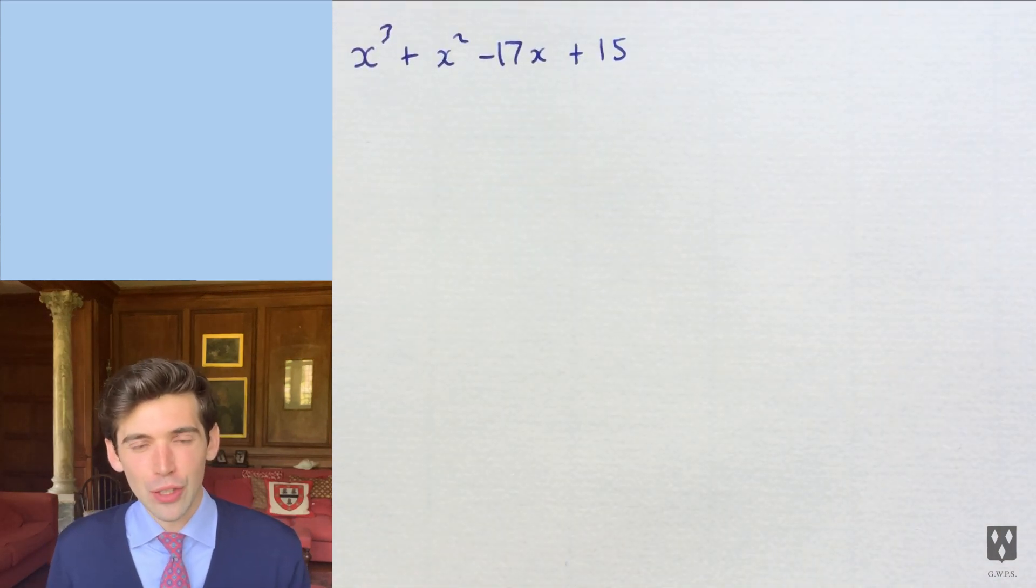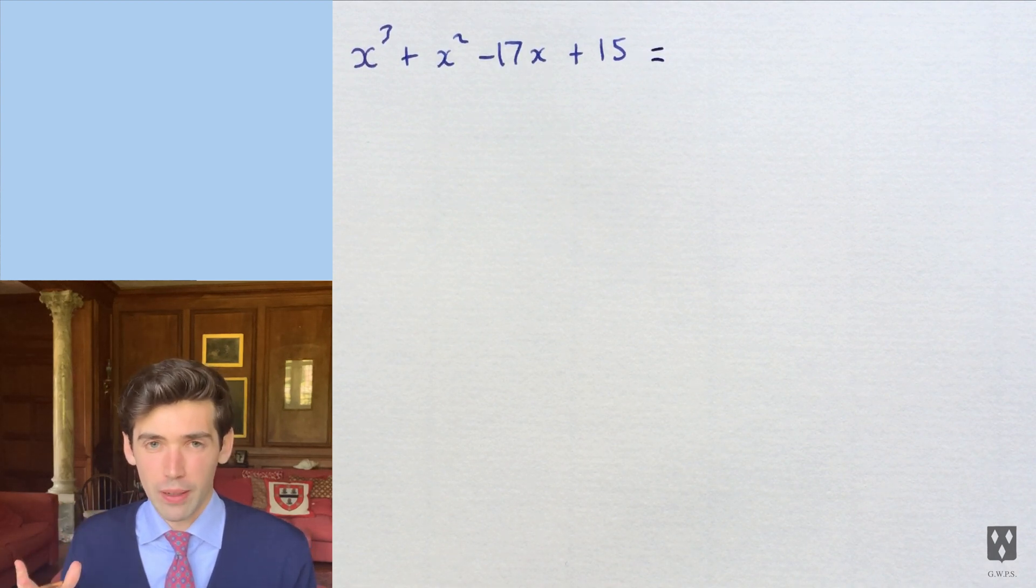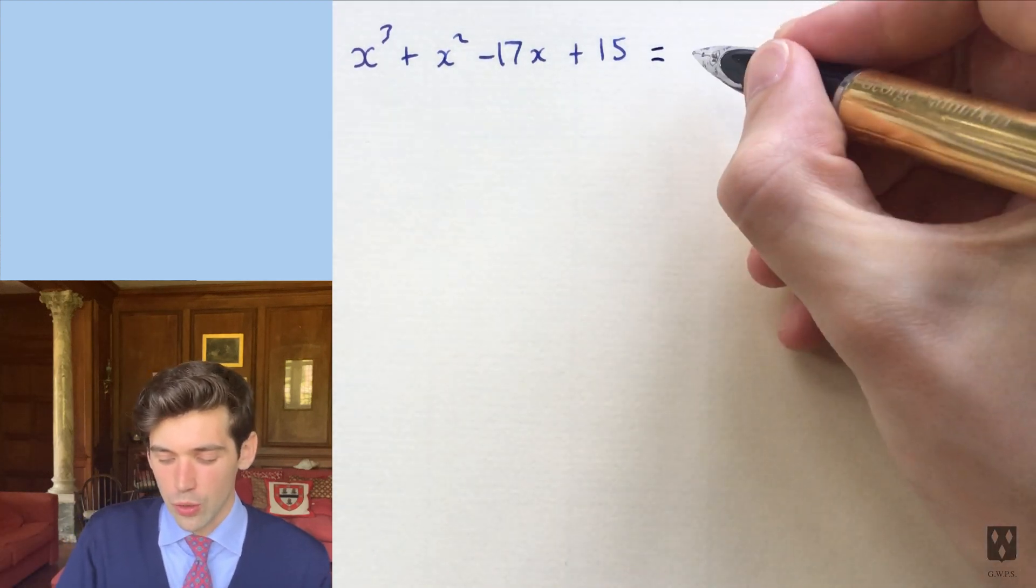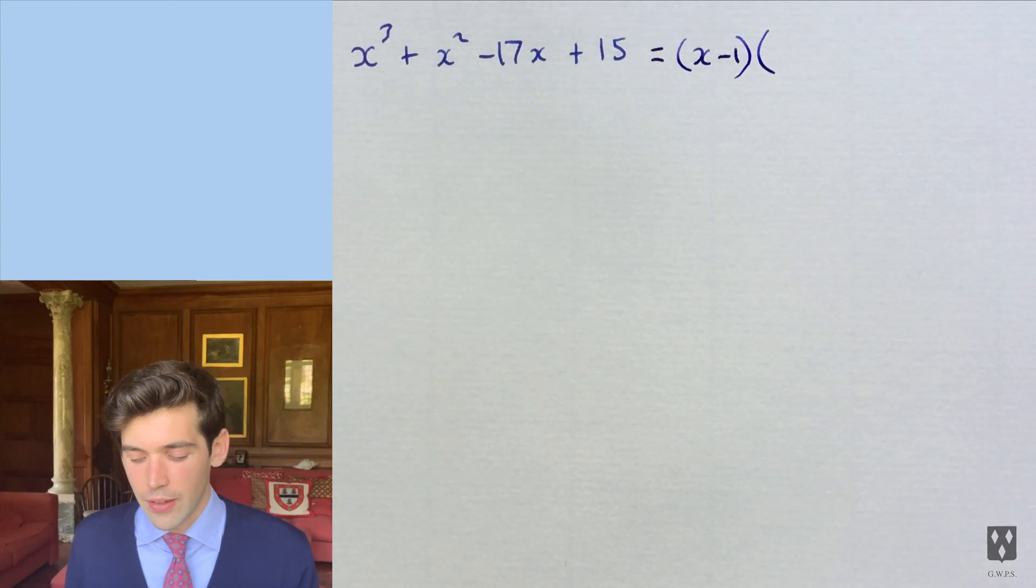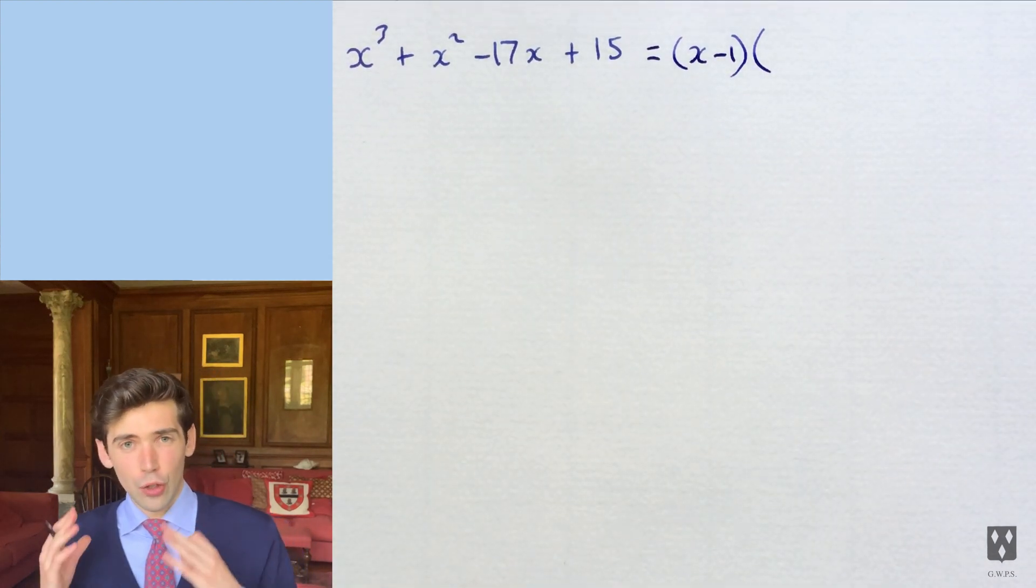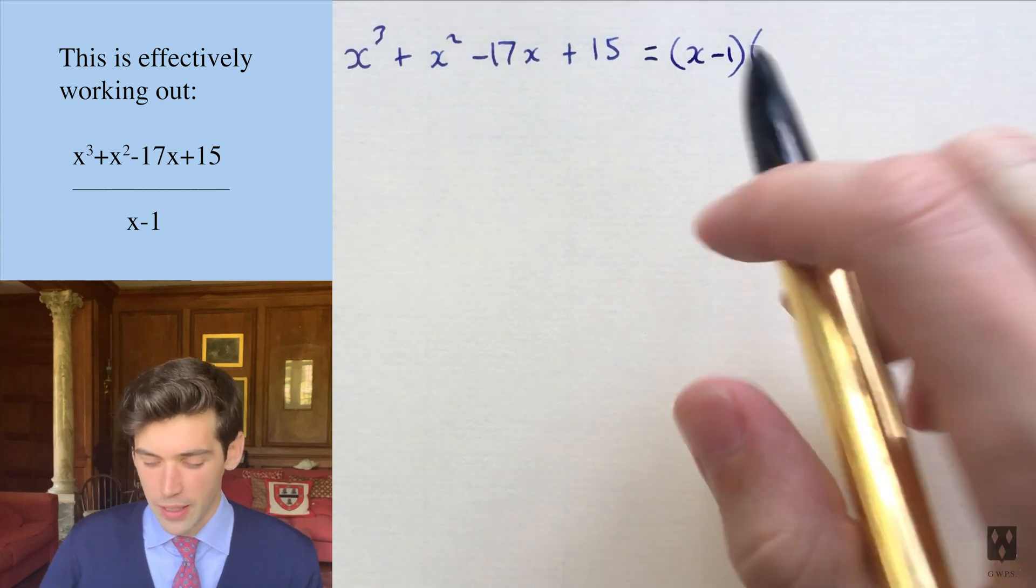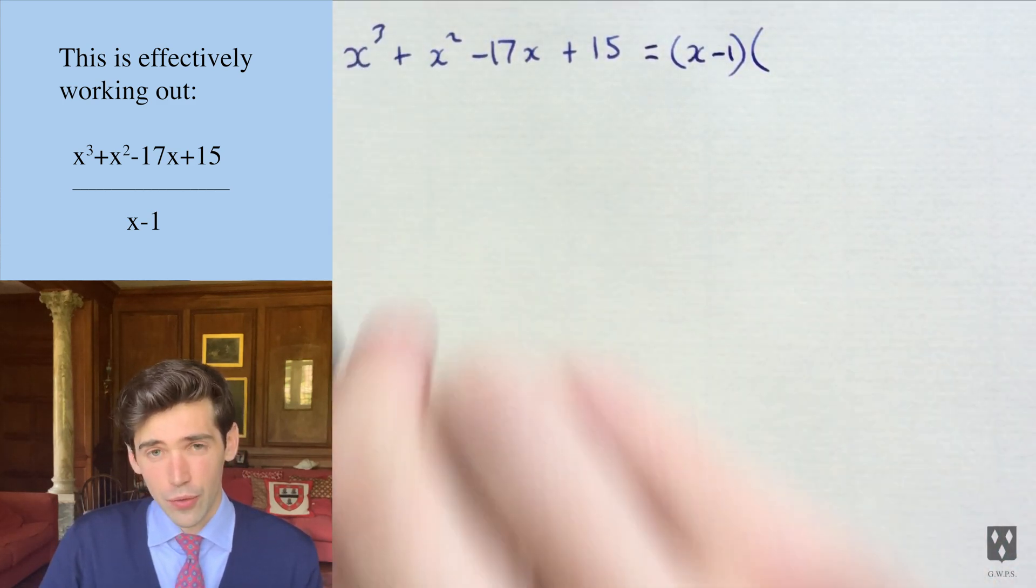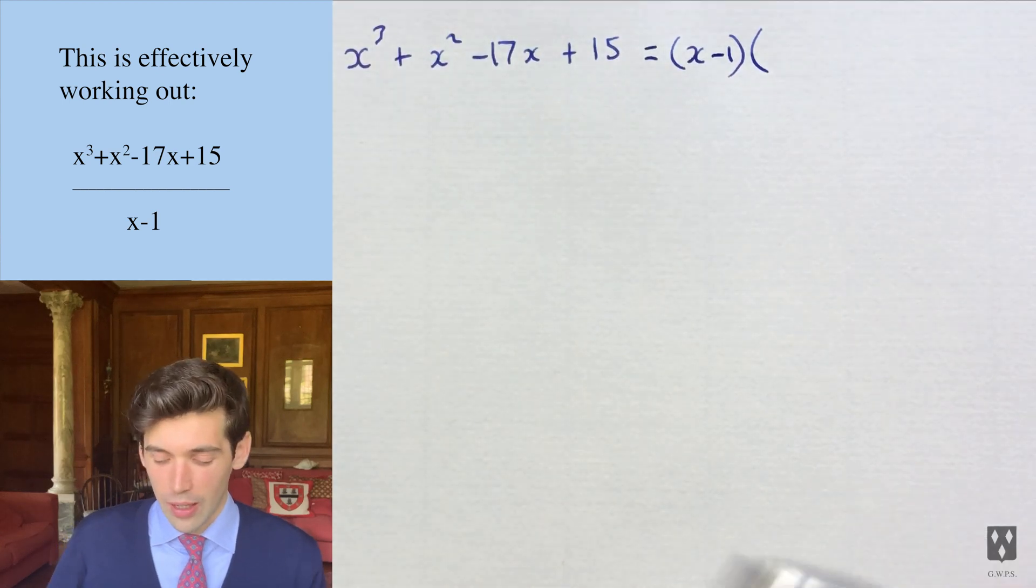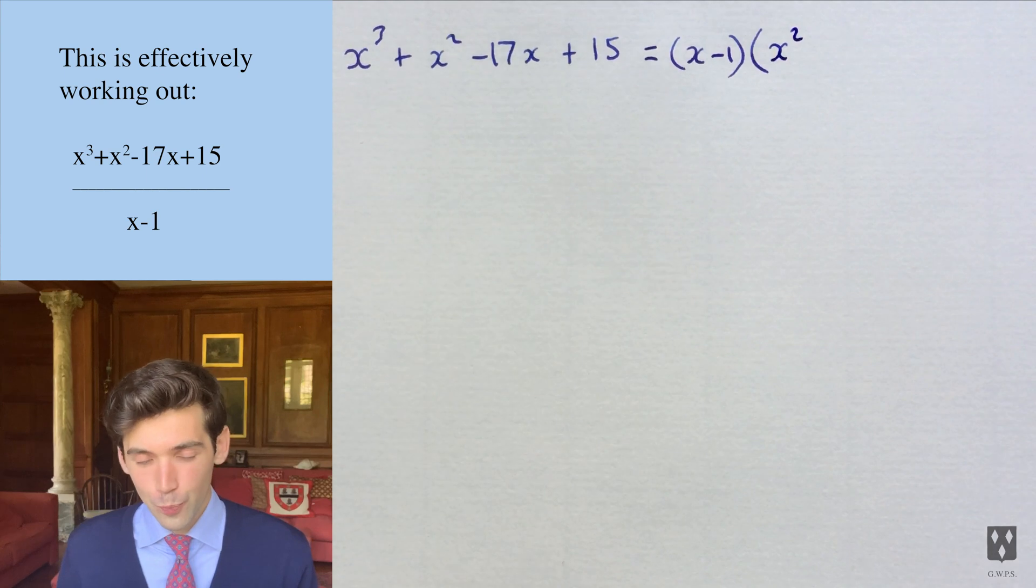Here's a cubic and you're given that x minus one is a factor. It's very rare that you ever have to factorize a cubic like this all on your own. So you're told that x minus one is a factor. You write x minus one and then you open up the brackets. You start off by inspection thinking, what do you need to multiply this x by to give x cubed? And we have to multiply it by x squared.